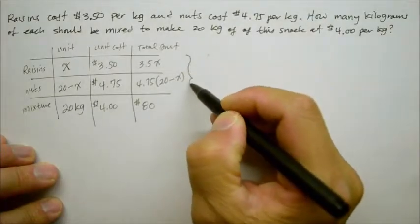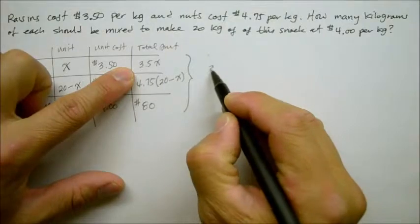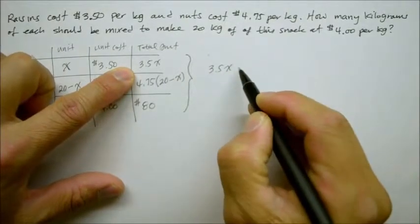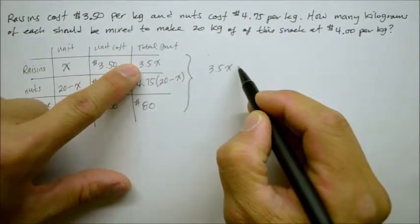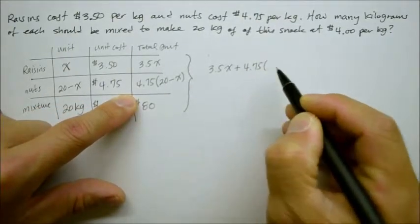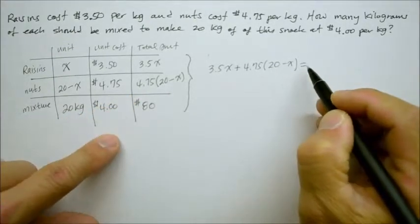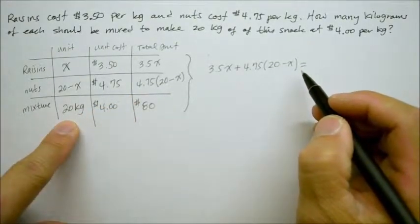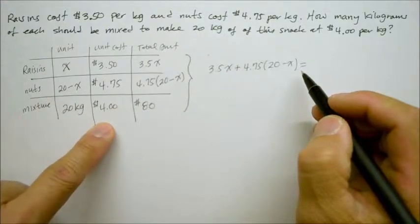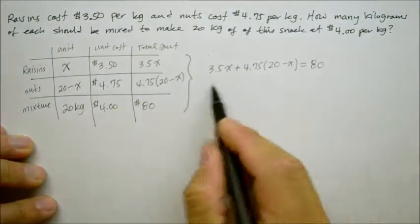And here's how it works. Whatever is in the far right column, that's going to be our equation. So it'll become 3.5X. And you're going to add to that raisin total cost plus the nuts total cost, 4.75 times 20 minus X. And that's going to equal the total cost of 20 kilograms at $4 for each kilogram the customer will pay. There's your equation.